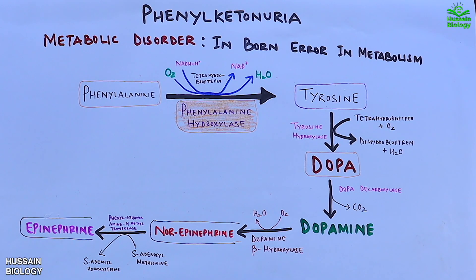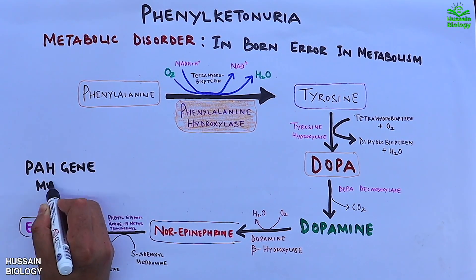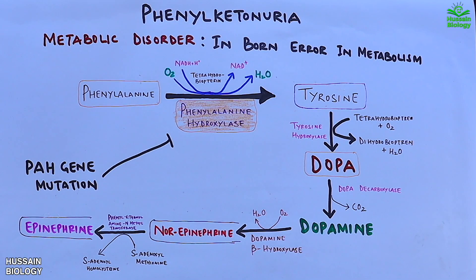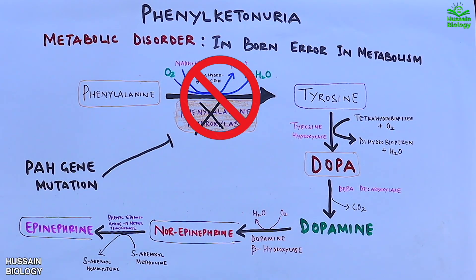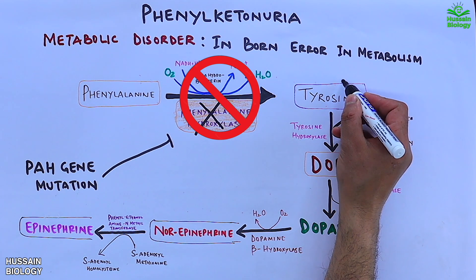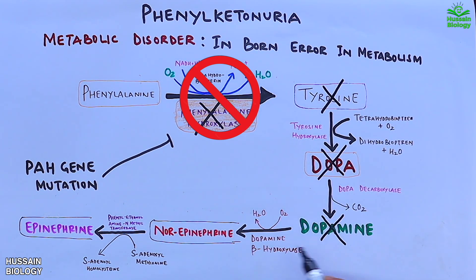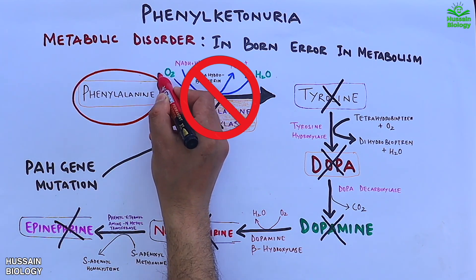This is the basic normal metabolism of phenylalanine. But when we have the PAH gene mutation, phenylalanine hydroxylase enzyme ceases to exist, which means phenylalanine will not be converted to tyrosine and we will be devoid of any further reactions. There will be absence of tyrosine, DOPA, dopamine, norepinephrine, and epinephrine — all enzymes cease to exist.